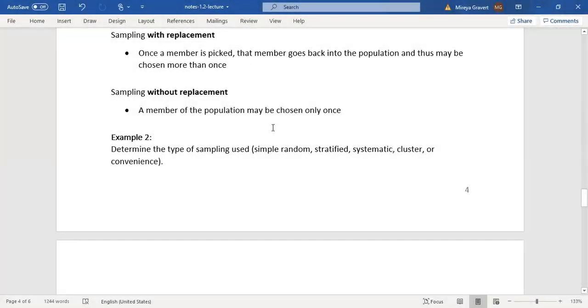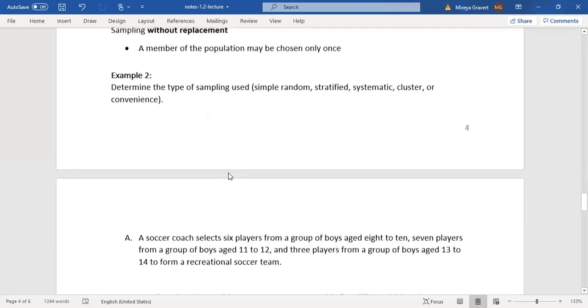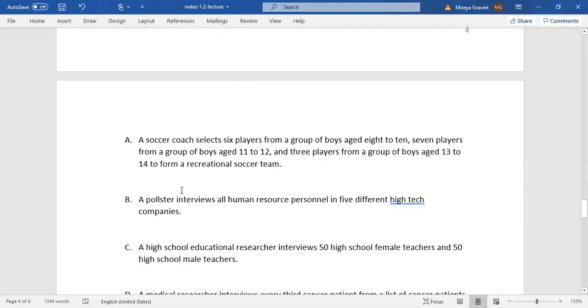We're going to start with Example 2: Determine the type of sampling used - simple random, stratified, systematic, cluster, or convenience. A soccer coach selects six players from a group of boys aged 8 to 10, seven players from a group of boys aged 11 to 12, and three players from a group of boys aged 13 to 14 to form a recreational soccer team.